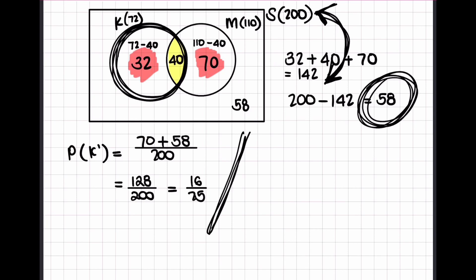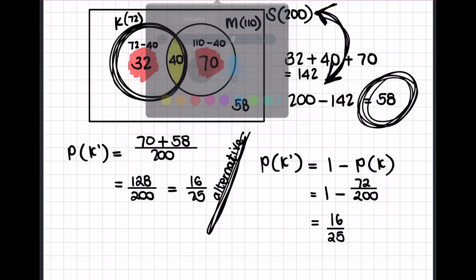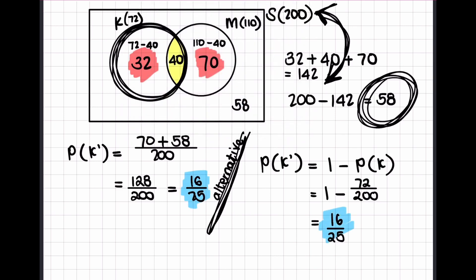There is, however, an alternative method. The probability of not liking KFC equals one minus the probability of liking KFC. So that would be one minus 72 over 200, which gives us an answer of 16 over 25. You can see that both of these equations result in the same answer.